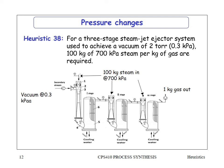Heuristic 38: for a three-stage steam jet ejector system achieving a vacuum of 2 Torr (0.3 kPa), you need 100 kg of steam at 700 kPa per kilogram of gas ejected. The vacuum at 0.3 kPa enters the first ejector, driven by low-pressure steam at 700 kPa, ultimately ejecting one kilogram of gas out of the system.